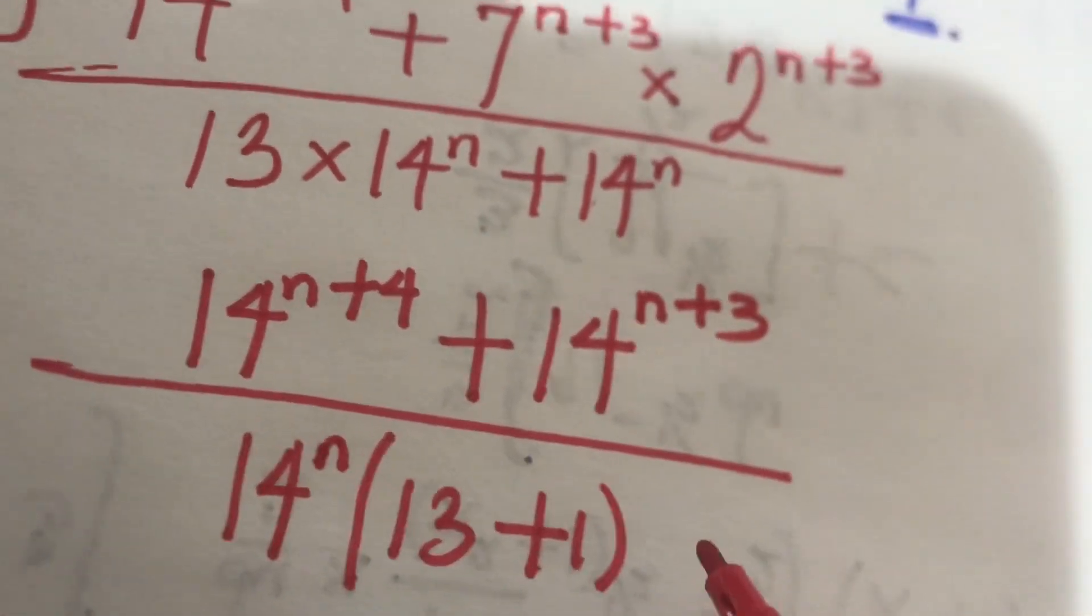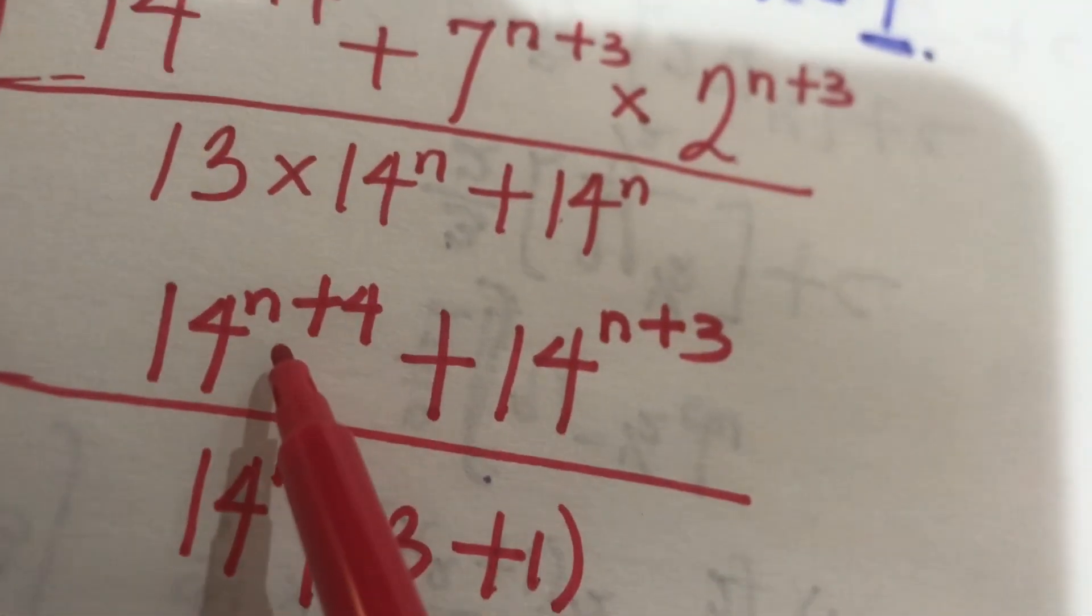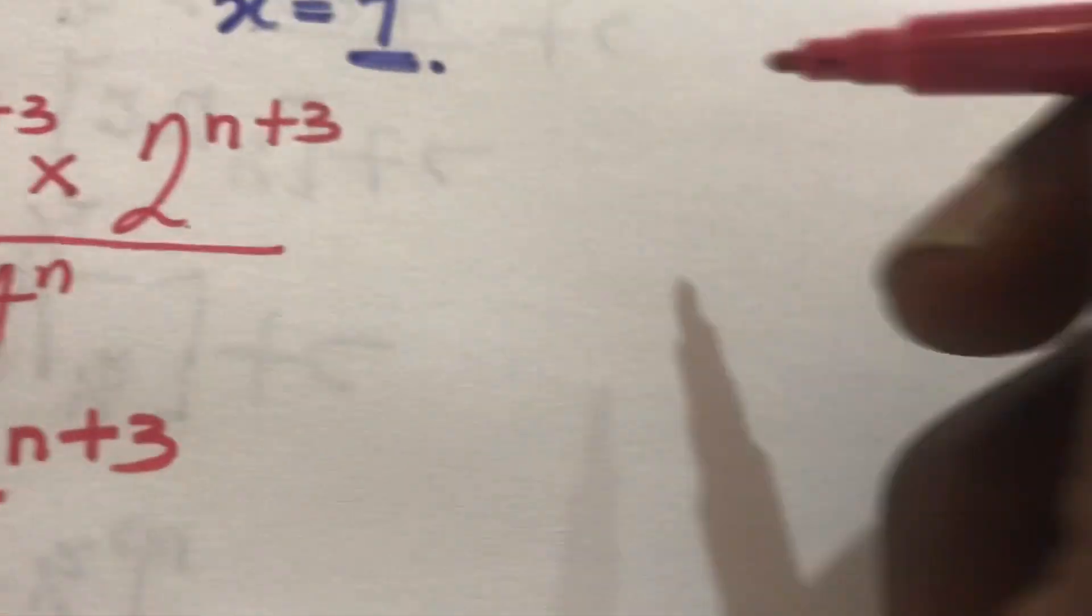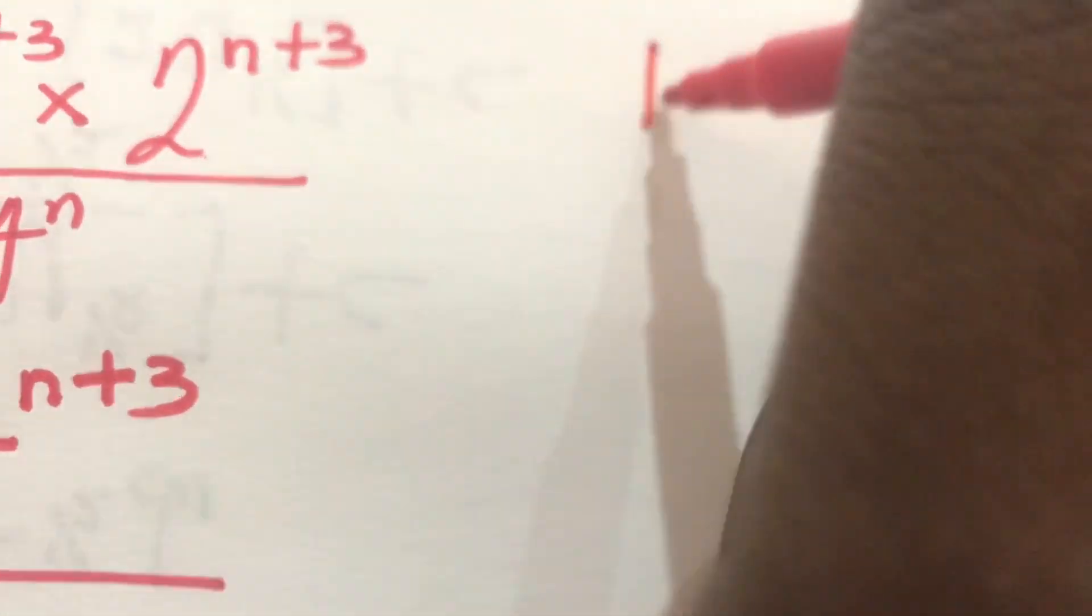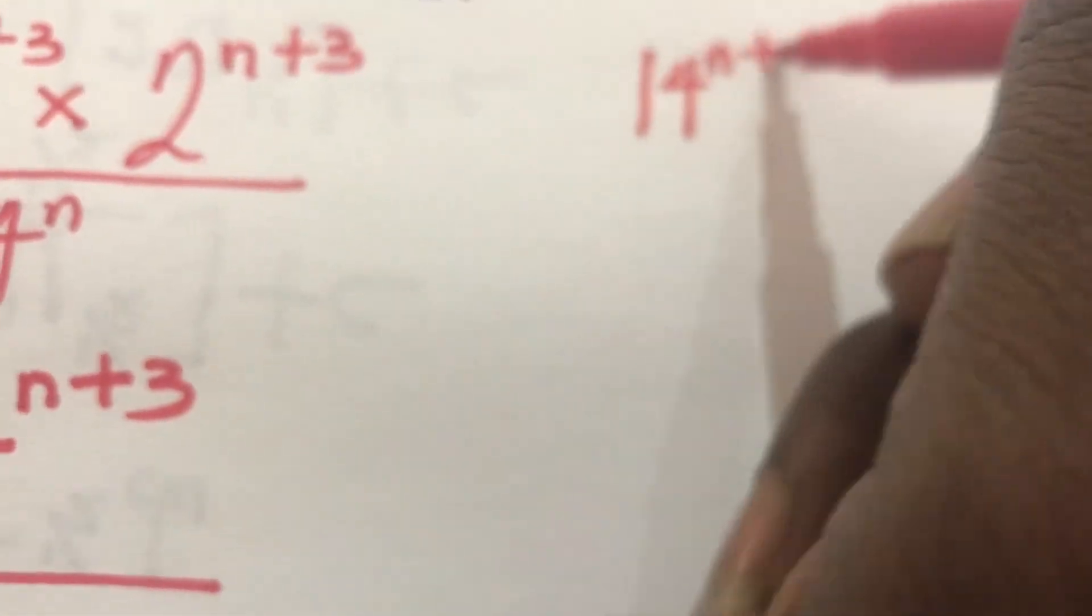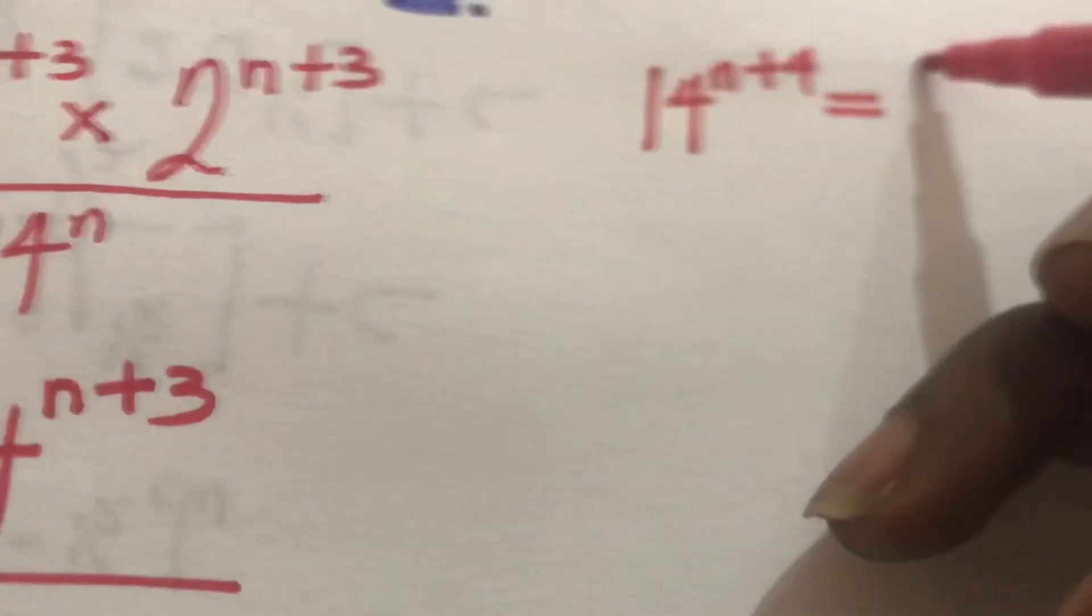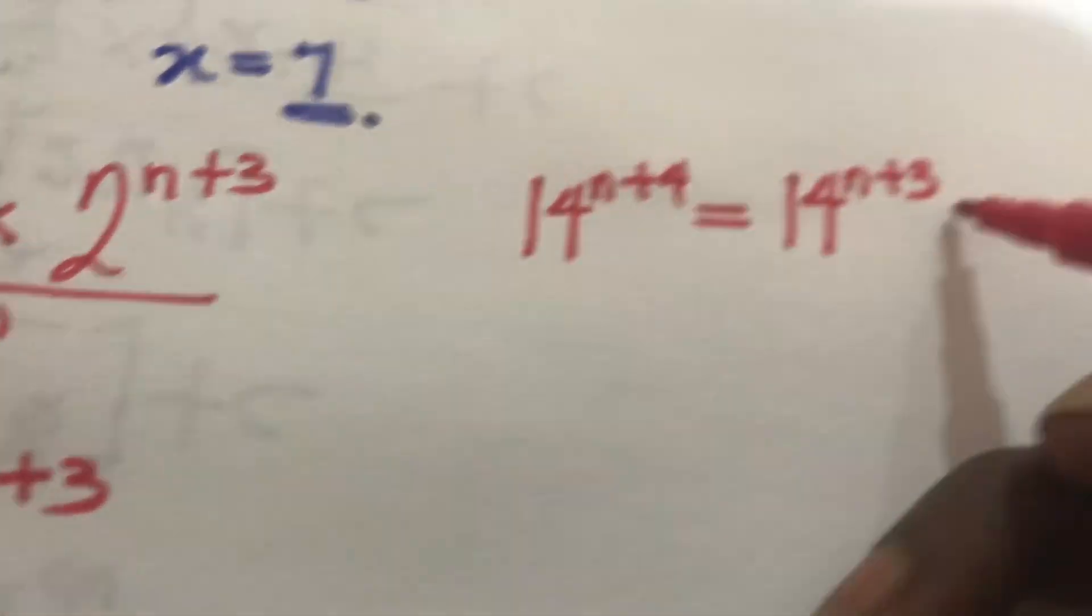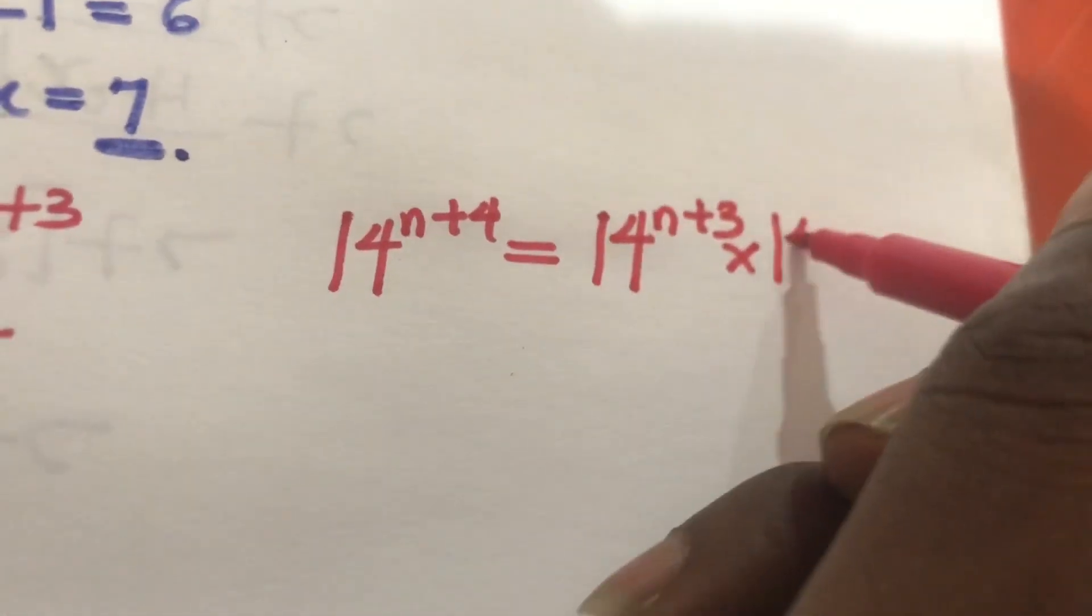At this point we can actually split this into two. This one will be equals to, let's say we are having 14 to the power n plus 4, which is equals to 14 to the power n plus 3 times 14 to the power 1. So this is equal to this.